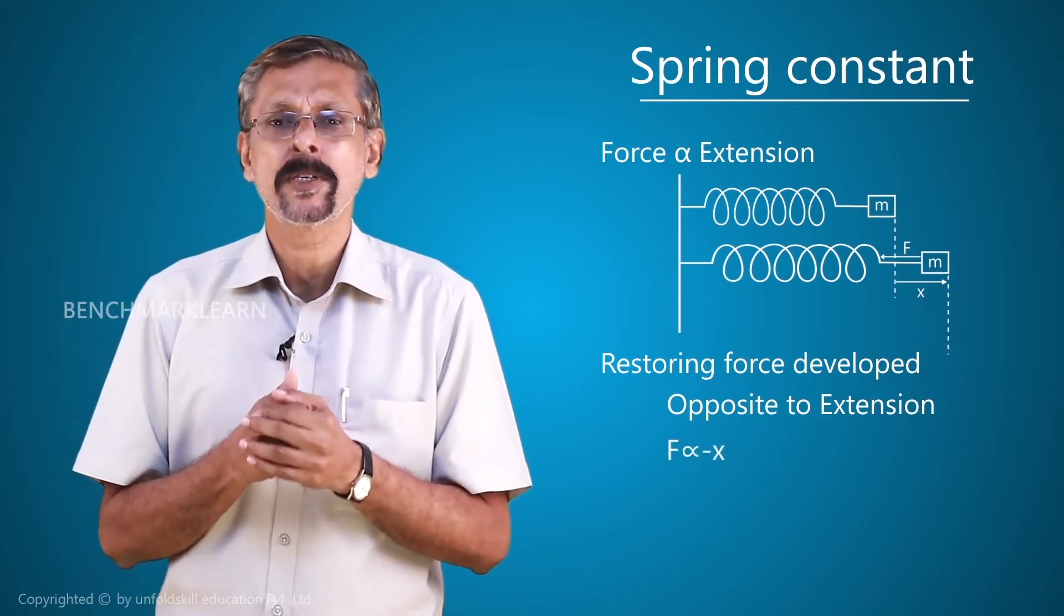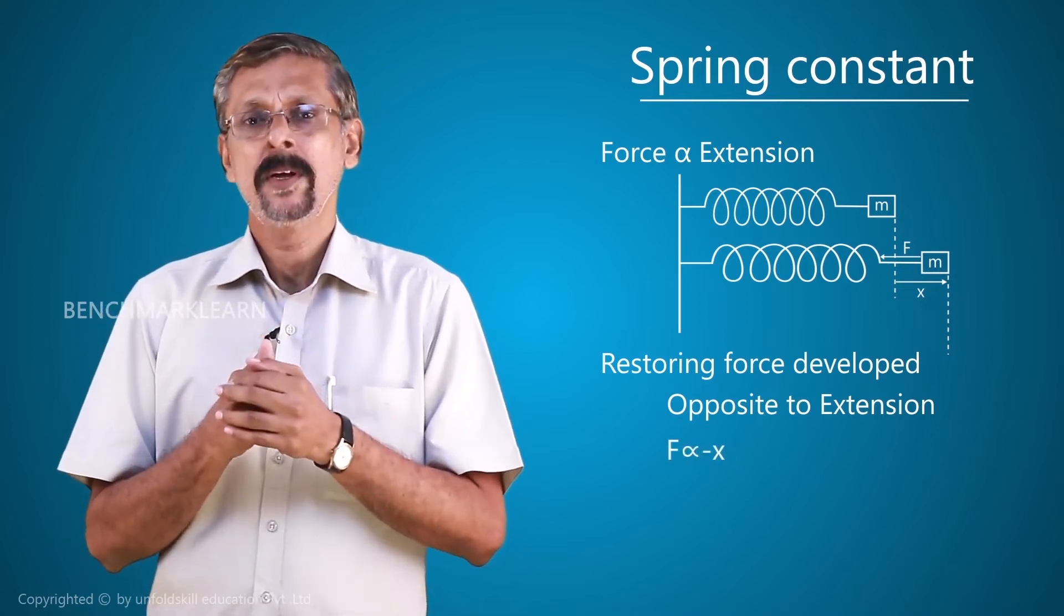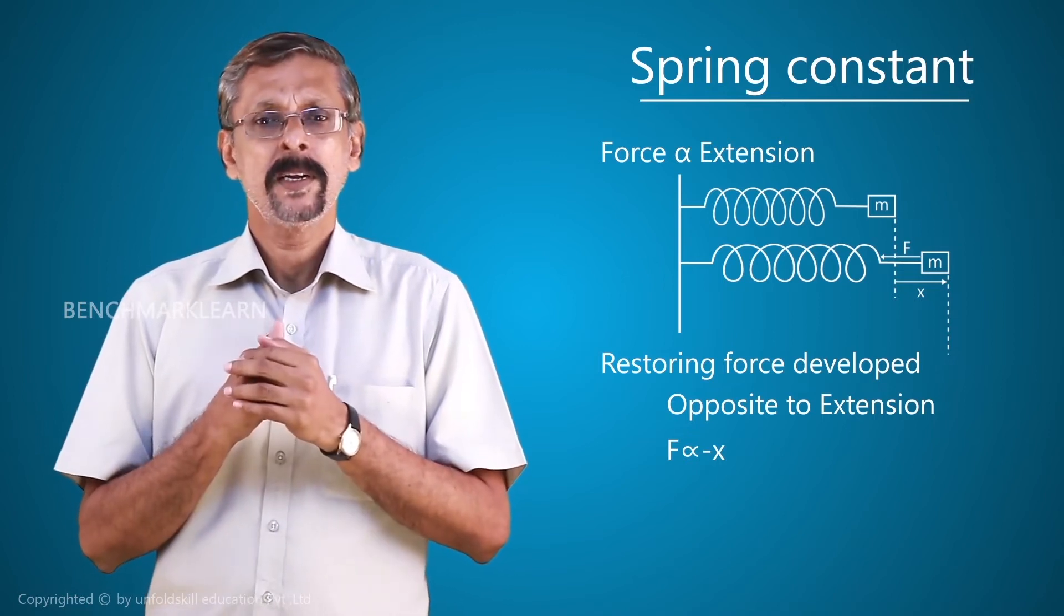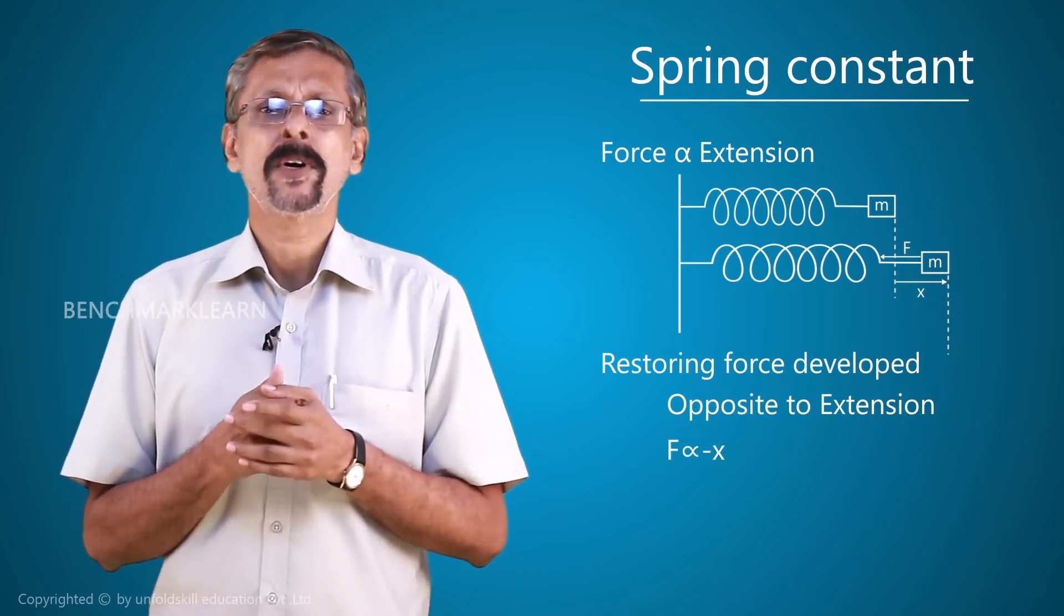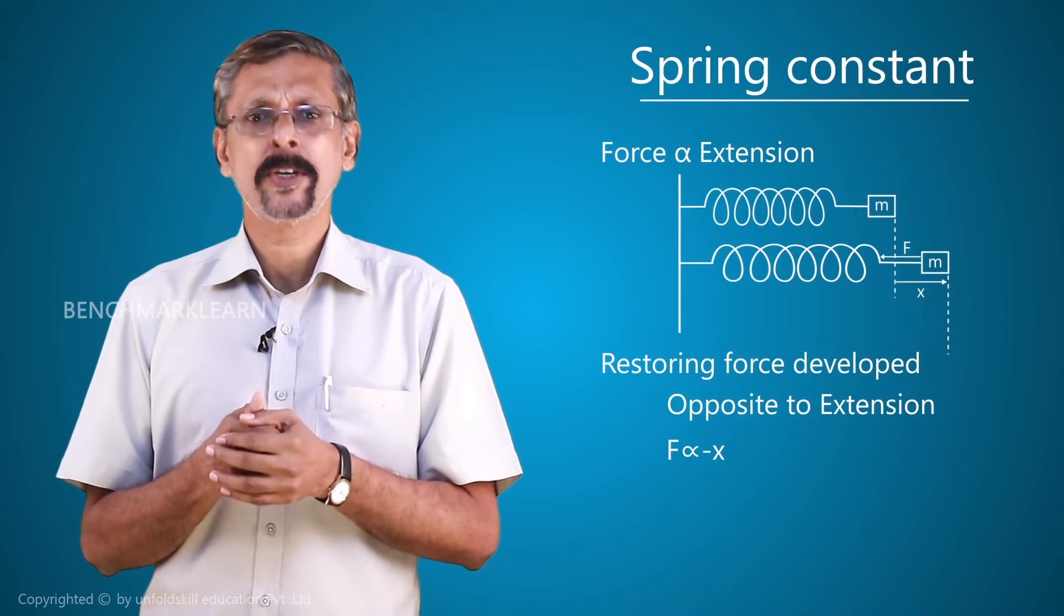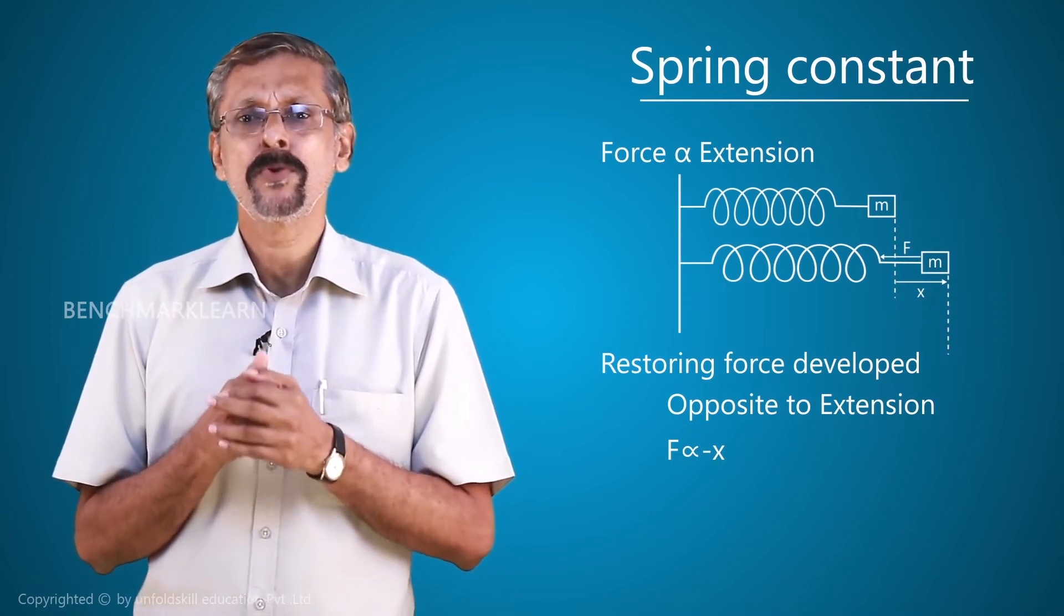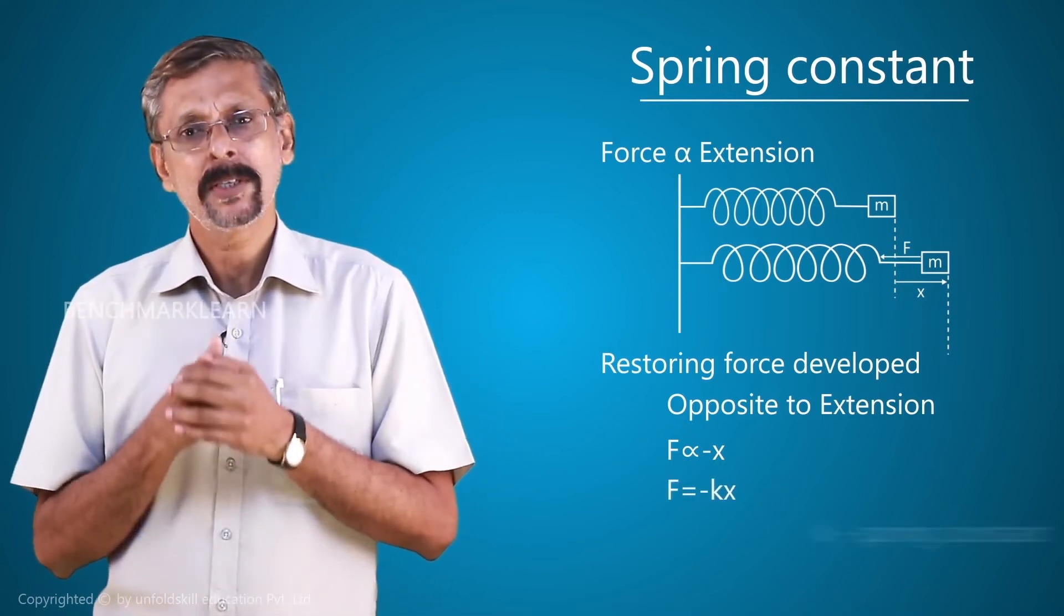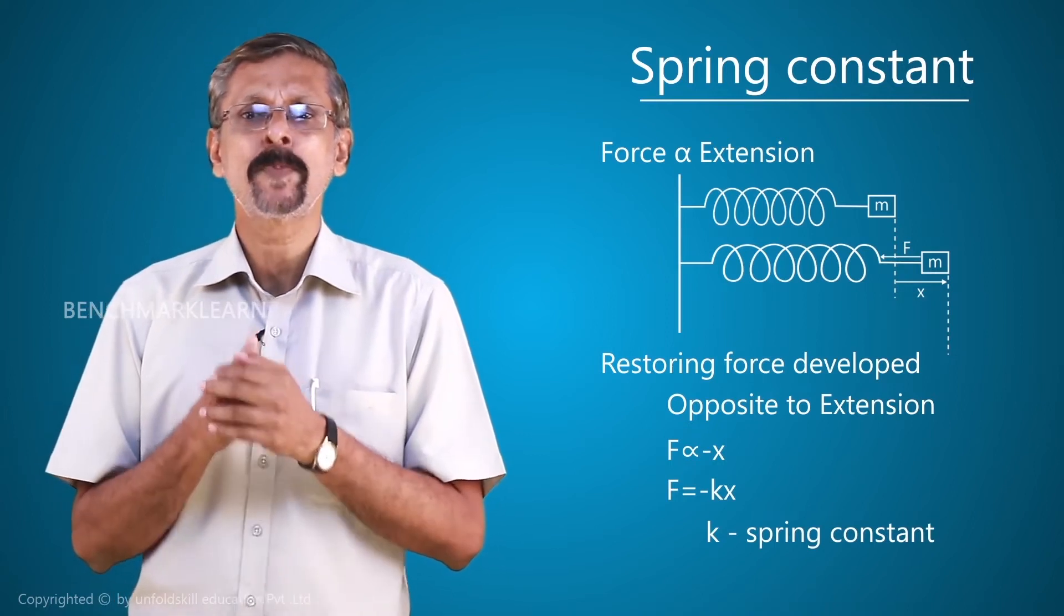Now we can write F proportional to minus x. This proportionality will be converted into a constant. Now we get an equation F equal to minus kx. This k is what is known as a spring constant.